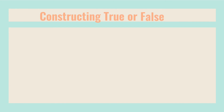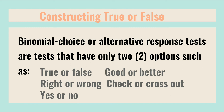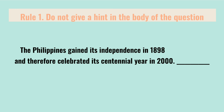Let us proceed to constructing the true or false type of test. Binomial choice or alternative response tests have only two options such as true or false, right or wrong, yes or no, good or better, check or cross out, and so on. A modified true or false test can offset the effect of guessing by requiring students to explain their answer and to disregard the correct answer if the explanation is incorrect. Rule number one: do not give a hint in the body of the question. Example: 'The Philippines gained its independence in 1898 and therefore celebrated its centennial year in 2000.' The answer is false because 100 years from 1898 is not 2000, but 1998.